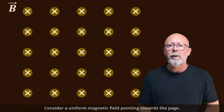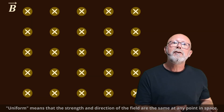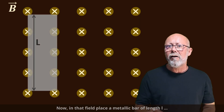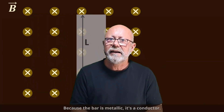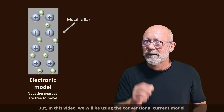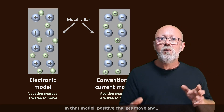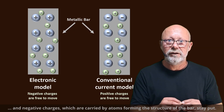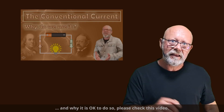Consider a uniform magnetic field pointing towards the page. Uniform means that the strength and direction of the field are the same at any point in space. In that field, place a metallic bar of length L that is moving to the right at a constant velocity v. Because the bar is metallic, it's a conductor, which means that electrons in the bar can move around freely. But in this video, we will be using the conventional current model. In that model, positive charges move and negative charges — which are carried by atoms forming the structure of the bar — stay put.